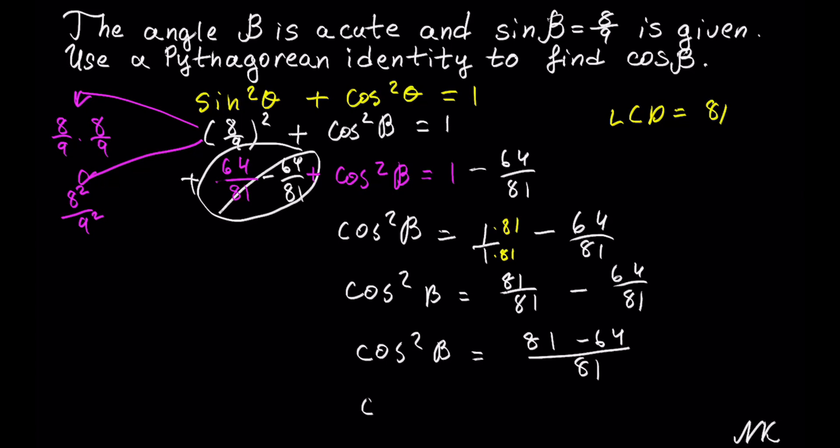And we get cos² β = 17/81. Cosine squared, so we need to do the inverse of squaring, which is a square root.